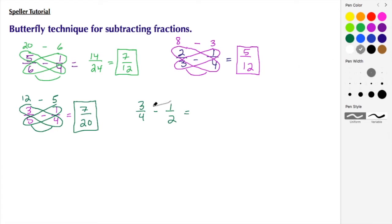Let's do the cross multiply: 4 times 1 to give me 4, and then 3 times 2 to give me 6. So now I have 6 minus 4 to give me 2 as my numerator. Let's multiply these denominators, 4 times 2 to get 8.